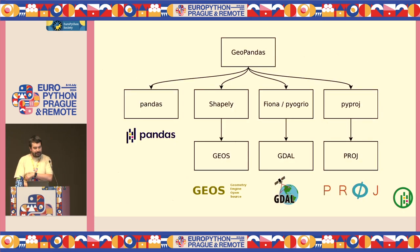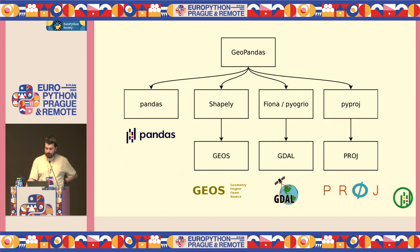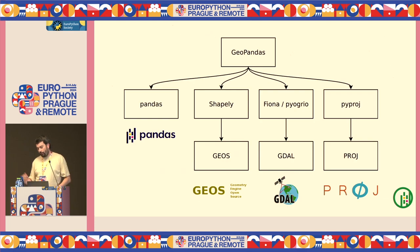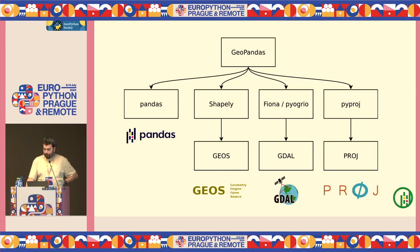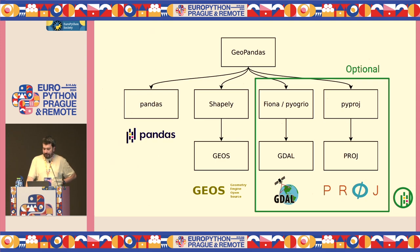This is the key dependency tree of GeoPandas. The middle row covers Python packages: Pandas, Shapely for geometries, Fiona and Pyogrio for reading and writing files, and PyProj for understanding where exactly on Earth the geometries are. Shapely, Pyogrio, and PyProj are wrappers to C++ libraries — GDAL, GEOS, and PROJ. Especially with GDAL it can be tricky to ensure everything is compiled correctly, so Fiona and Pyogrio are now optional. We still require GEOS because GeoPandas without geometries is just Pandas.